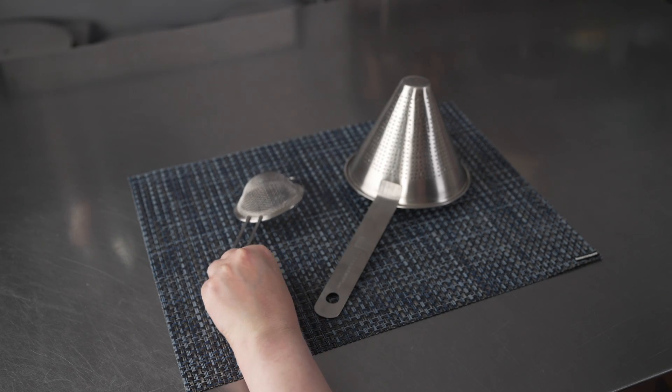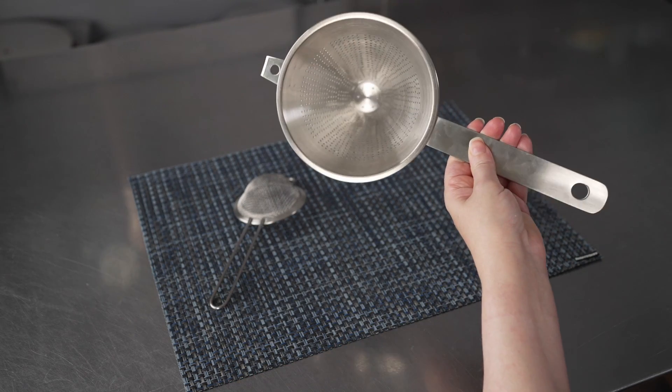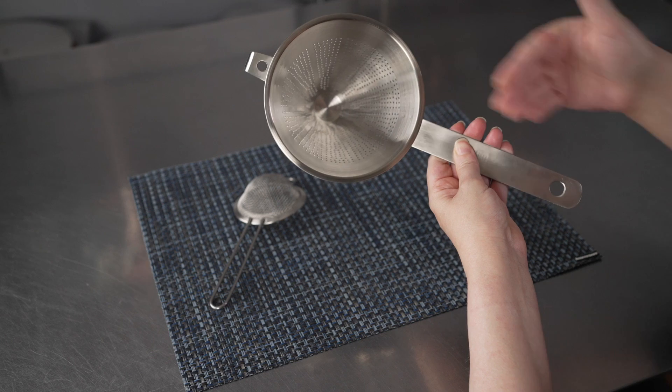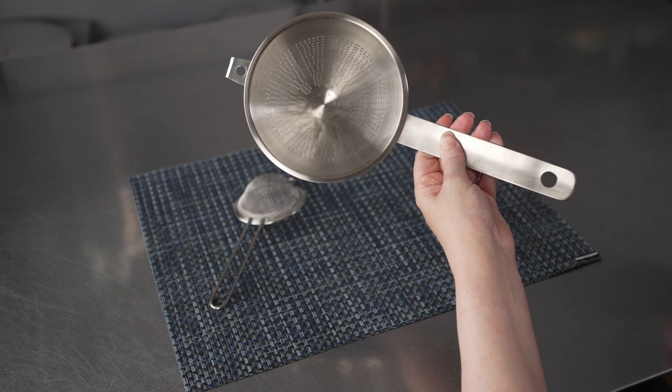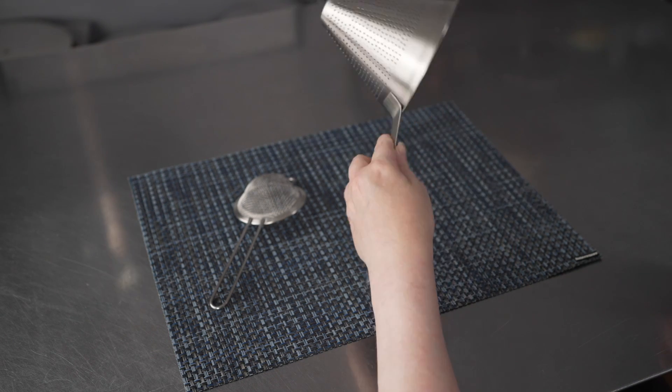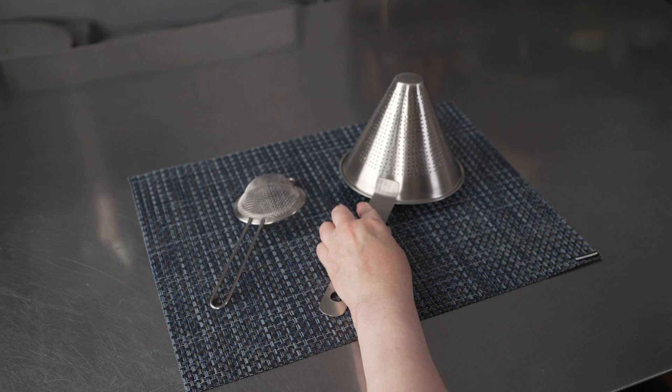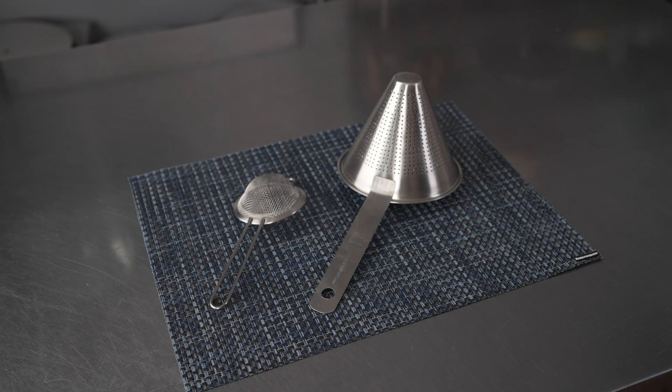The second is the china cap coarse strainer and this one is eleven and three quarters inches in length. The mesh strainer is also available in a nine and three quarters and twelve and a quarter inch length, so two larger sizes.